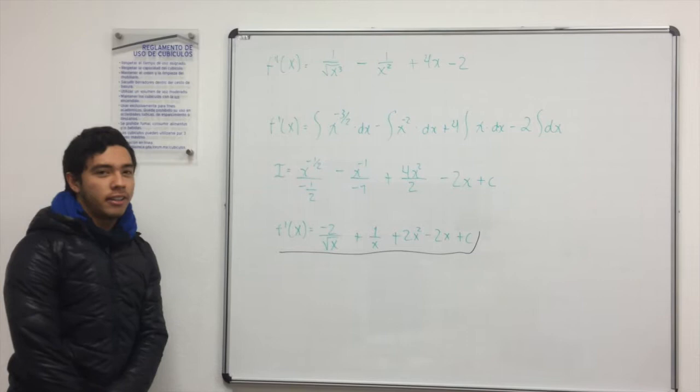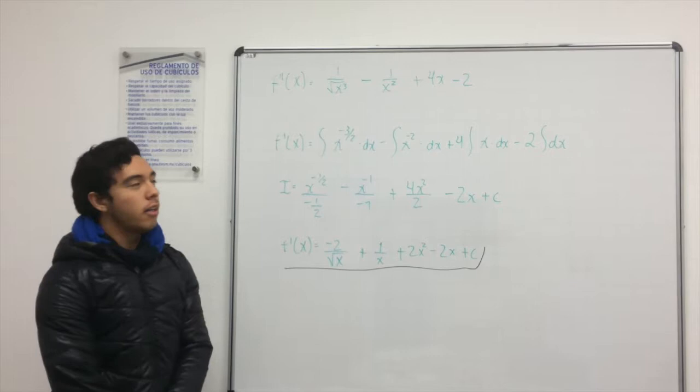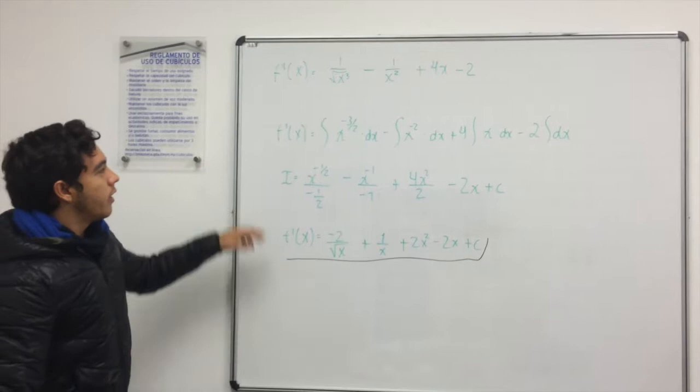So we have here our equation, the second derivative, and we need to find the first derivative. And the equation is 1 over square root of x cubed minus 1 over x squared plus x minus 2.